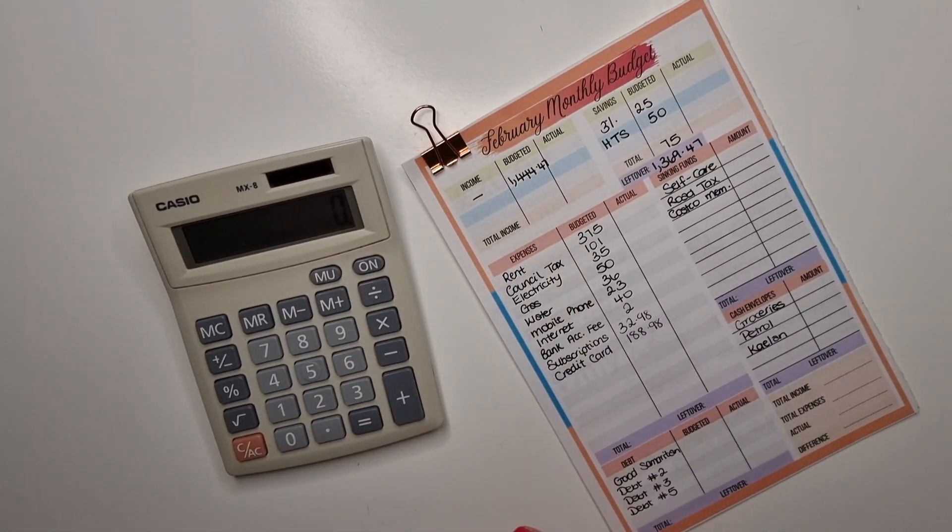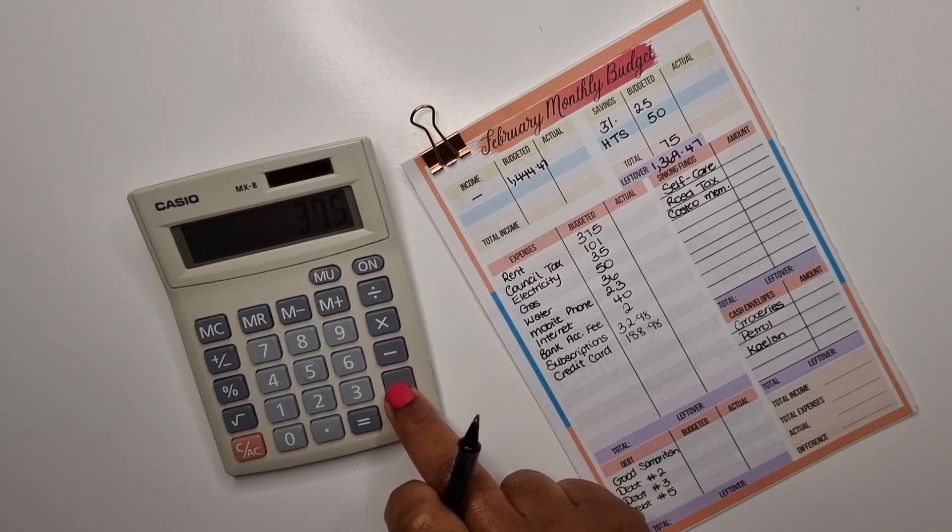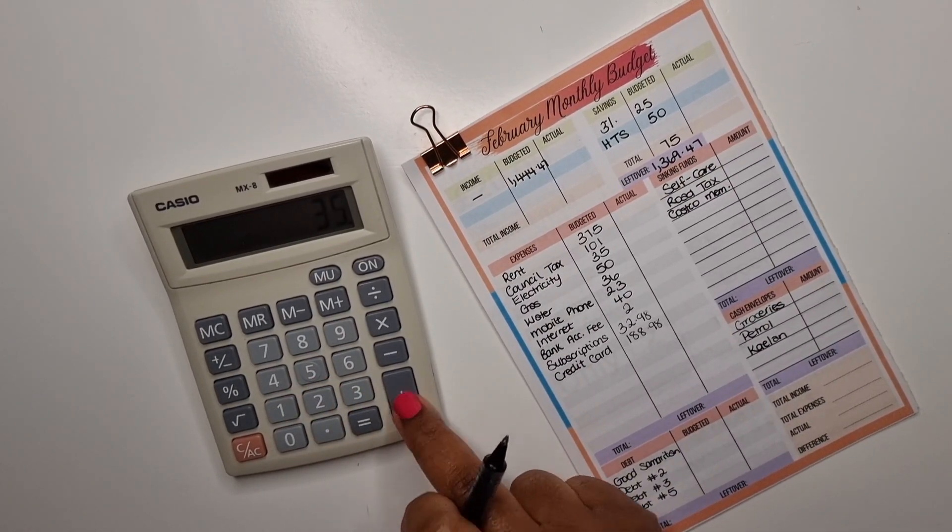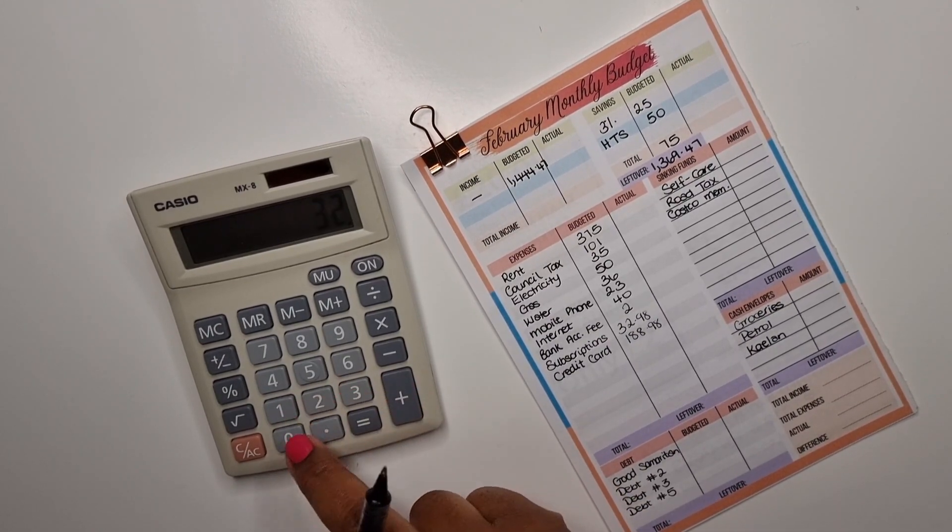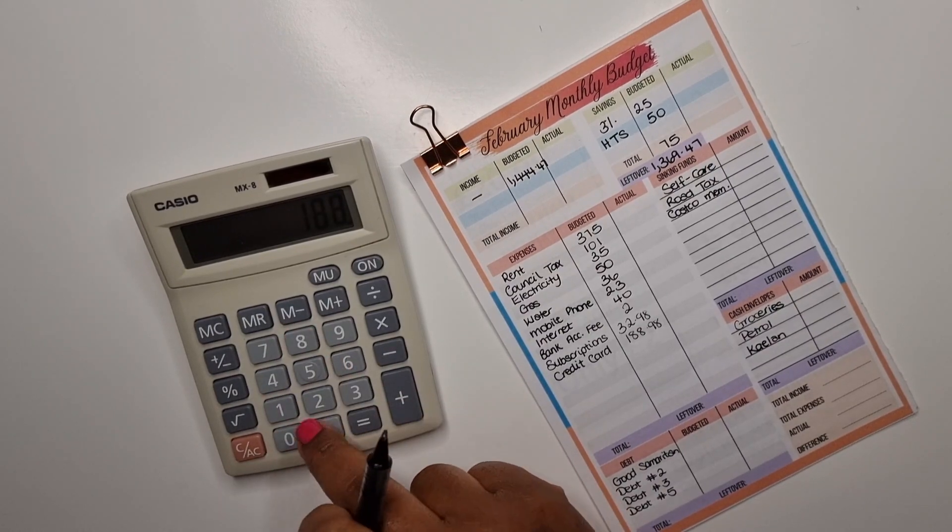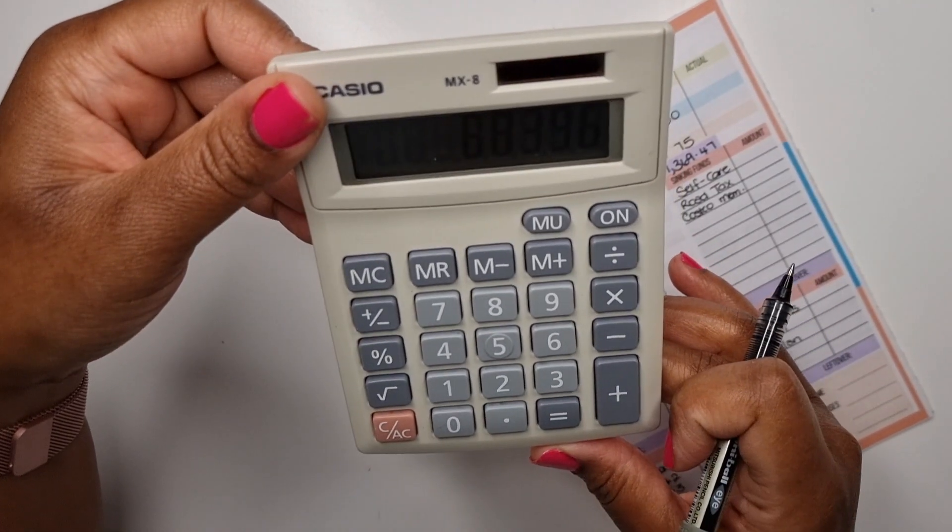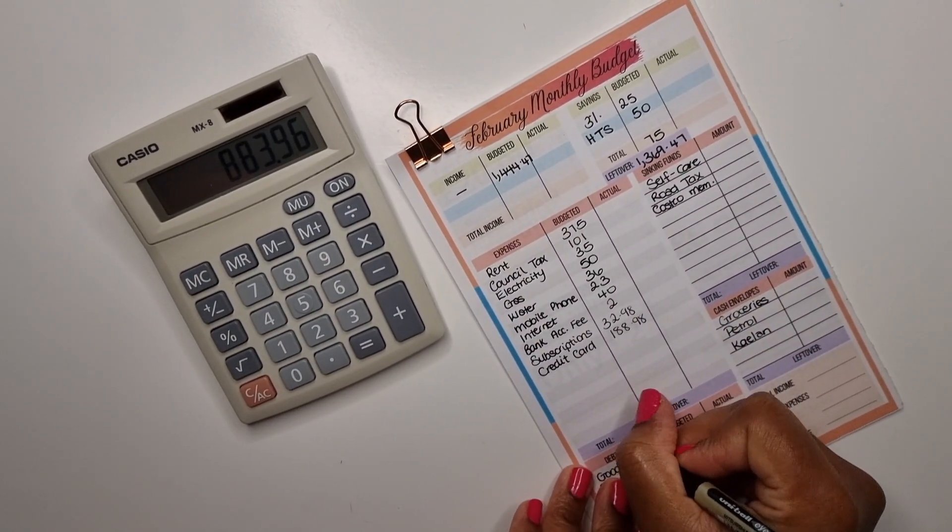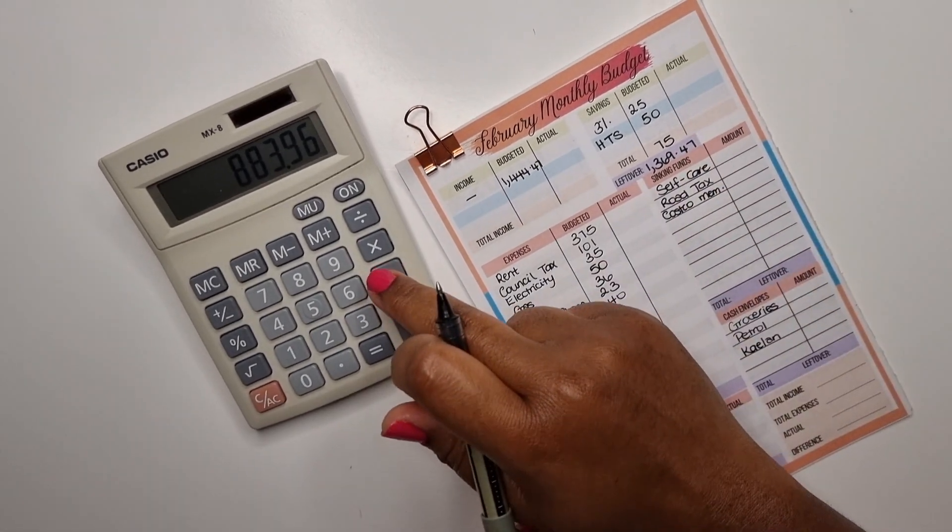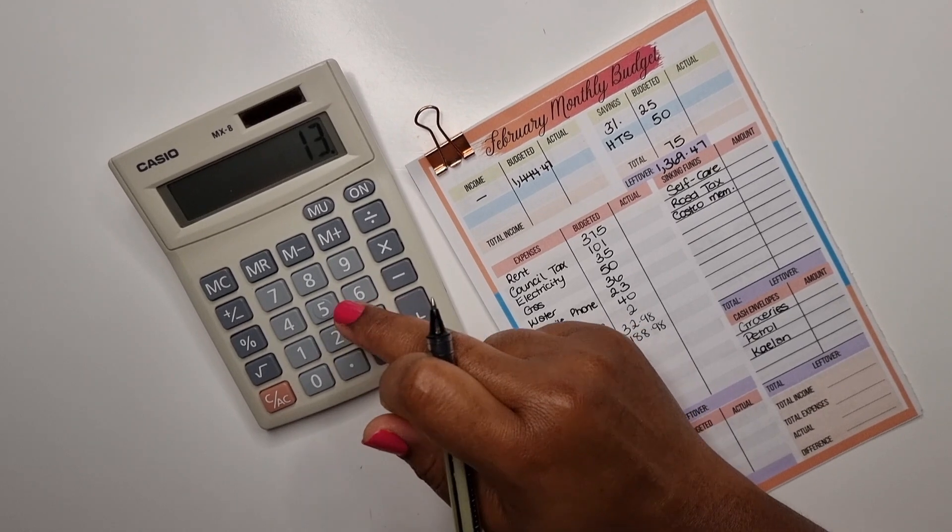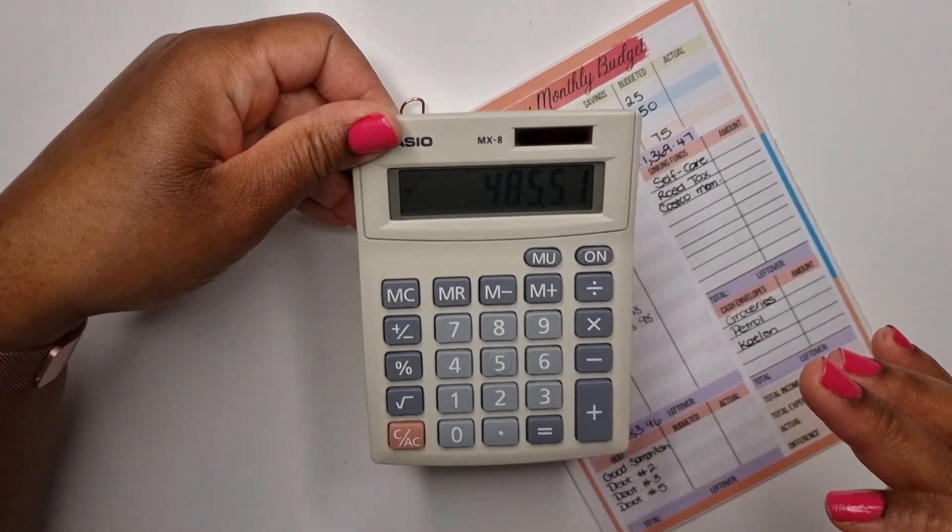I'm going to add these up. Like I said, I have some new stuff that I'll be doing, but I'll speak about that more in detail as time progresses. So that's eight hundred eighty-three pounds ninety-six pence. And I'm going to subtract this amount from the amount up top, from one thousand three sixty-nine pounds forty-seven pence. That gives us four hundred eighty-five fifty-one.